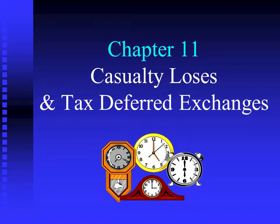We're primarily dealing with material from chapter 11, but we're also going to pick up casualty losses from chapter 8. For an individual, these are an itemized Schedule A deduction. For businesses, they are deductible for AGI. And then we're going to do the tax-deferred exchanges from chapter 11.